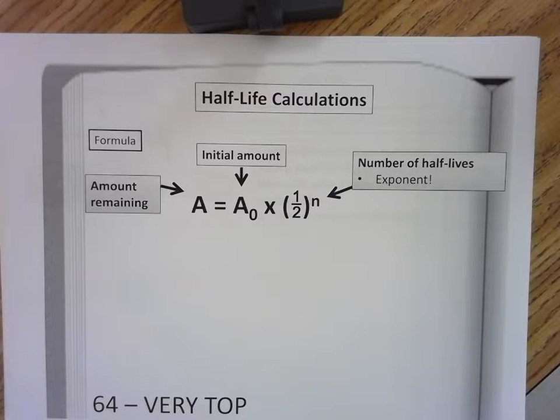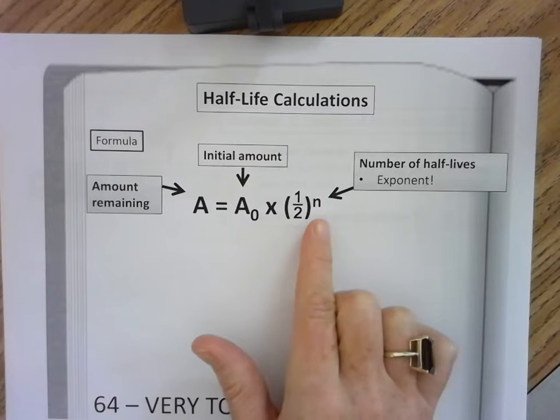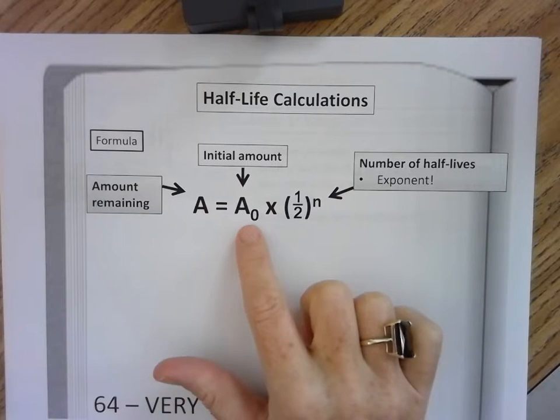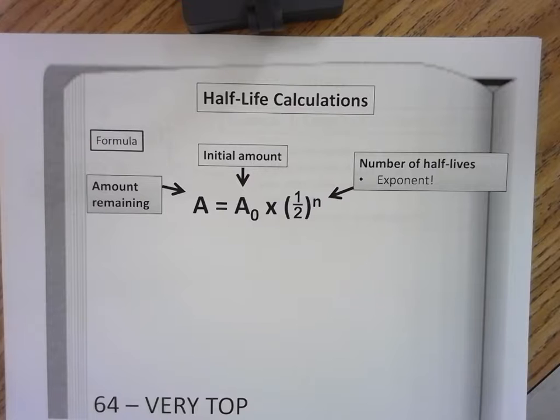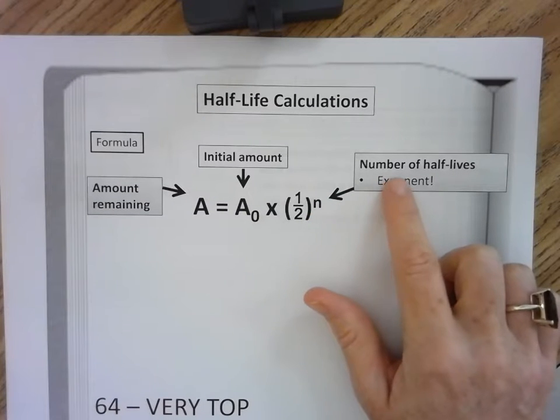The formula is A equals A0 times one-half to the power of n. A represents the amount of radioactive isotope remaining. A0 is subscripted and represents the initial amount of the radioactive material, and this n is the number of half-lives and it is an exponent.